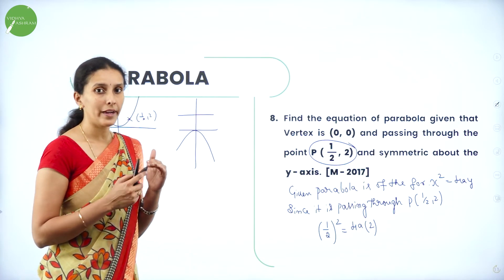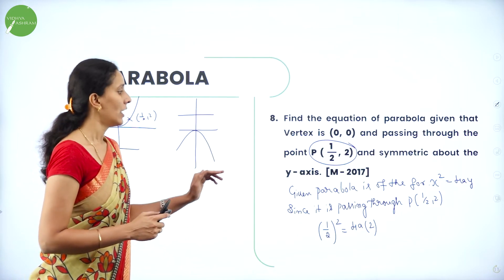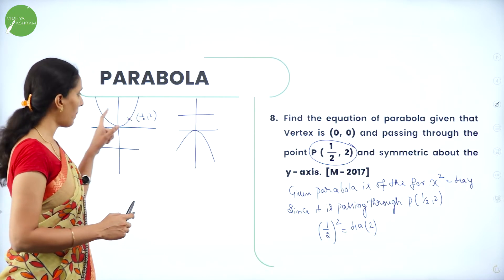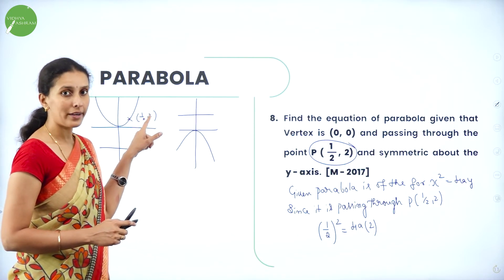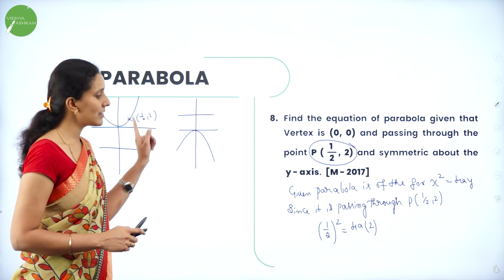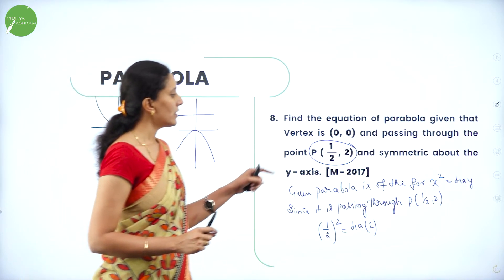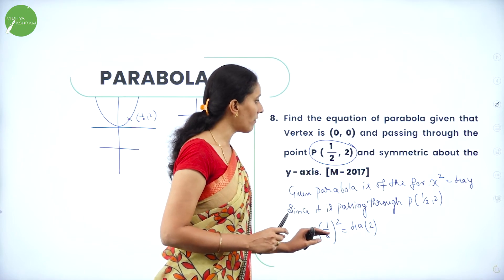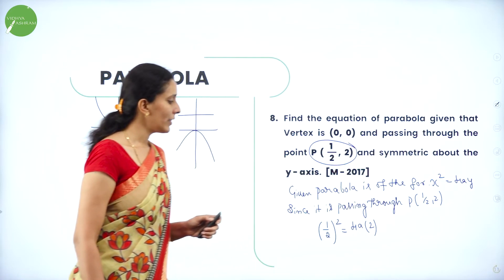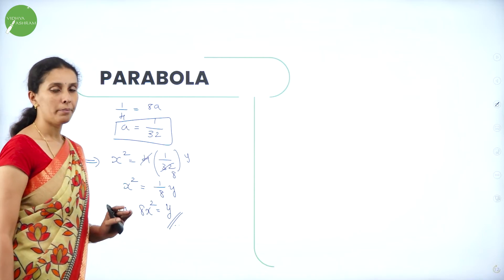To summarize: we first determined the orientation — upward or downward — based on the symmetric axis and the given point. Since the point lies in the first quadrant, the upward parabola form x² = 4ay was used. Substituting the given point's coordinates gave us the value of a, allowing us to write the standard equation of the parabola.